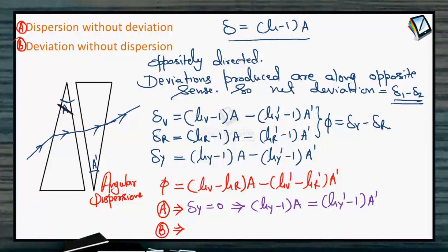And similarly for case B, deviation without dispersion means mean deviation may be there, but we don't want any kind of angular dispersion, meaning this value φ must be 0. For B, φ should be 0, that means (μ_violet - μ_red)A = (μ_violet' - μ_red')A'. So this is condition B, mean deviation without angular dispersion.